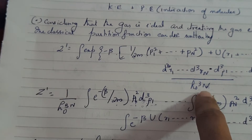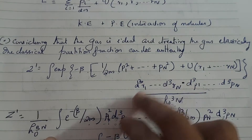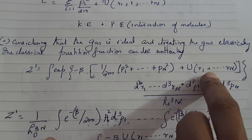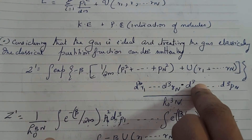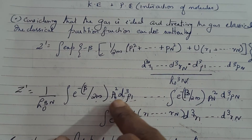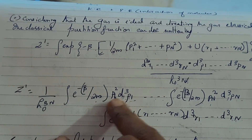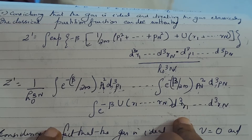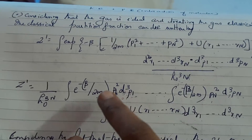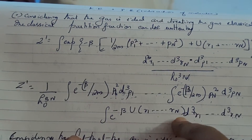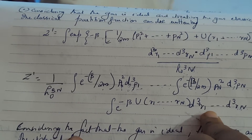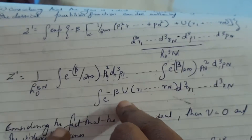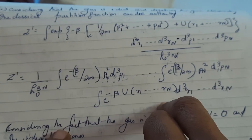So you have the partition function. Now I just separate out the like terms — for momenta dp and for the potential energy, the coordinate values. You can separately write the integral for the momenta and for the potential energy. This part is for the kinetic energy and these integrals are for the potential energy. Because it is an exponential term we can write it as a product of sum terms.